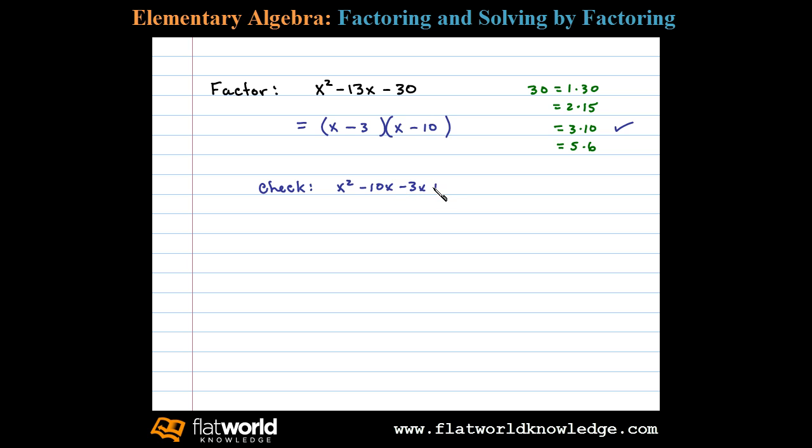When we simplify, we can see -10x minus 3x is -13x, which is the same as our middle term. But we have +30 and the original had -30. That tells me this factorization is incorrect. We have to use a different combination of numbers.